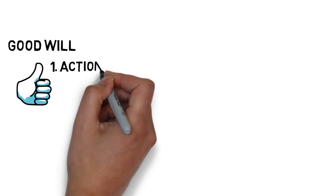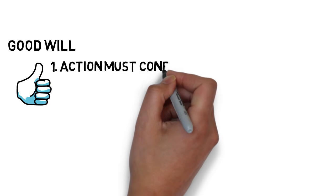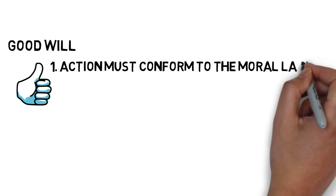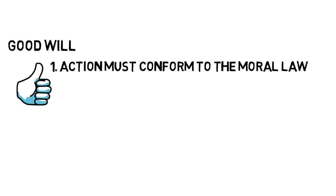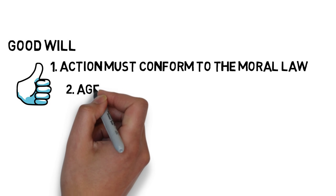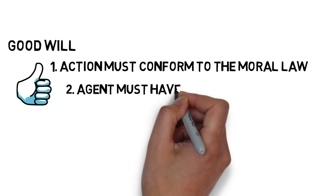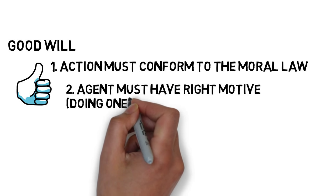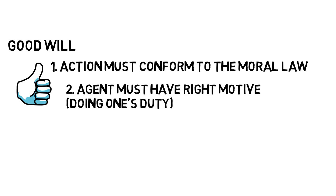This means that there are two elements to having a good will. First, the actions that are chosen by a person must be the right kind of actions. They are actions that conform to the duties which are set by the moral law. Second, a person must choose the right action solely because it is the right thing to do. This is to say that he or she must have the right motive.